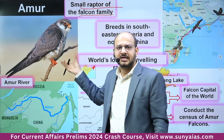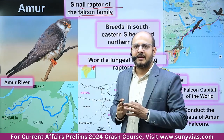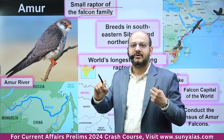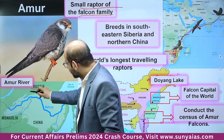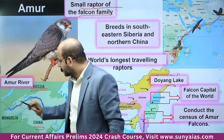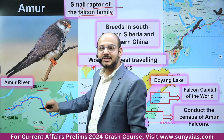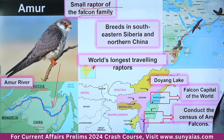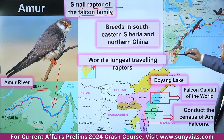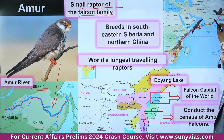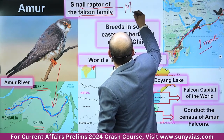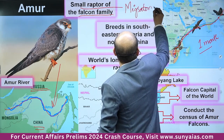The Amur Falcon is a small raptor of the falcon family. Its name comes from the Amur River, a transboundary river separating China and Russia. It is native to that region. The falcon flies from China and that border region and comes to India — specifically to Doyang Lake in Nagaland — where it stays for around one month. Migratory bird species are very important for the exam.